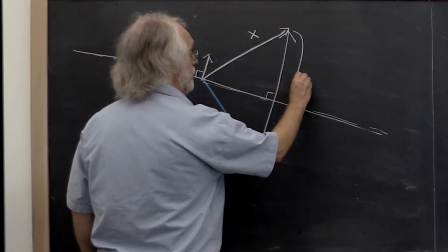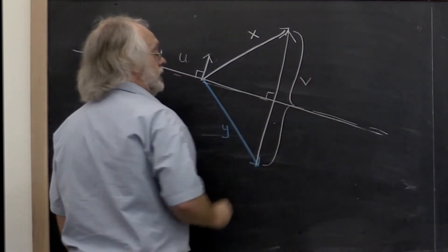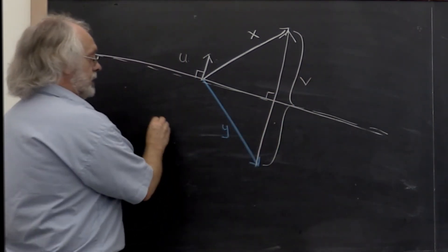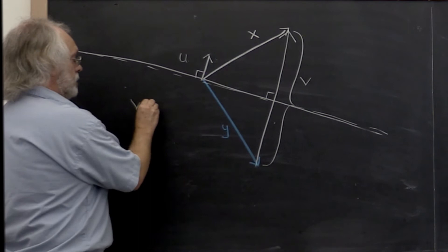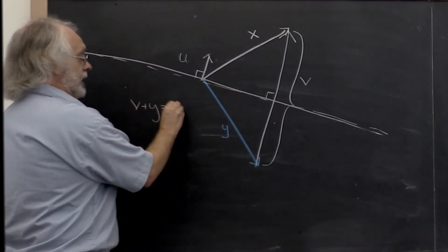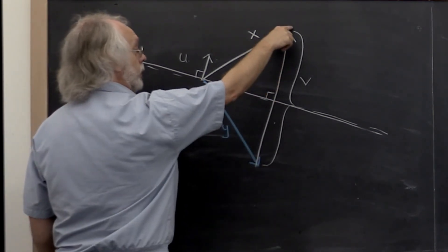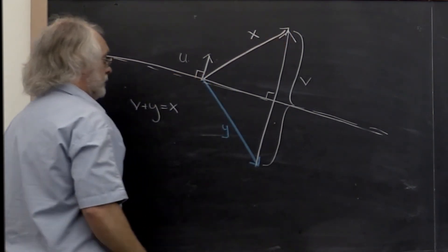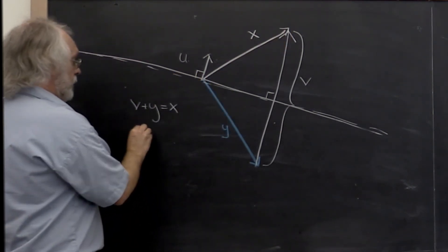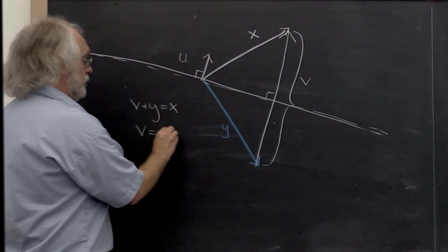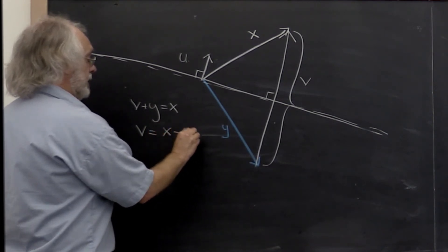Let's call that vector v. And what do we know? We know that v plus y gives us x. Because the net effect of going here first and then going there is the vector x. And therefore we can see that v is just equal to the vector x minus the vector y.